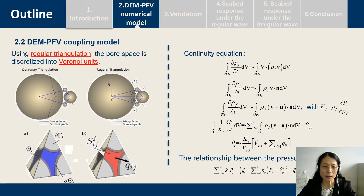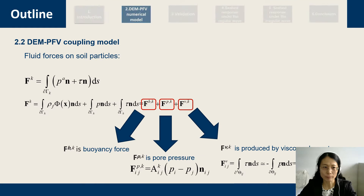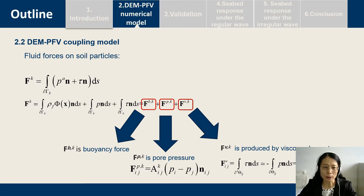Here is the DEM pore fluid coupling model. We use a regular triangulation; the porous seabed domain is discretized into Voronoi units. This is the continuity equation. We calculate the fluid forces on the soil particles, including the buoyancy force, the pore pressure force, and the viscous drag force.